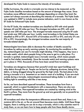Meteorologists have been able to decrease the number of deaths caused by tornadoes by setting up early warning systems. By monitoring the conditions in the sky, meteorologists can see if a tornado might develop. If this happens, they issue a tornado watch, which alerts people living in the area to get to a safe place. If a tornado is spotted, meteorologists issue a tornado warning, which means people need to find shelter immediately. Since the tornado watch and warning systems were put in place in 1953, thousands of lives have been saved from tornadoes.